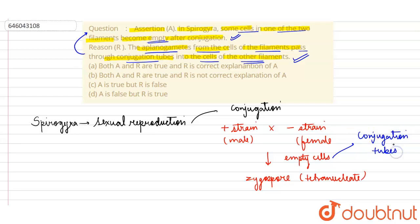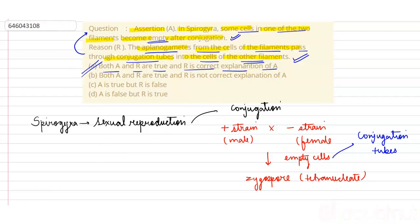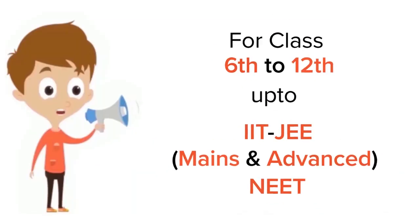Option A is the correct answer: both the assertion and reason are true, and the reason is the correct explanation of the assertion.